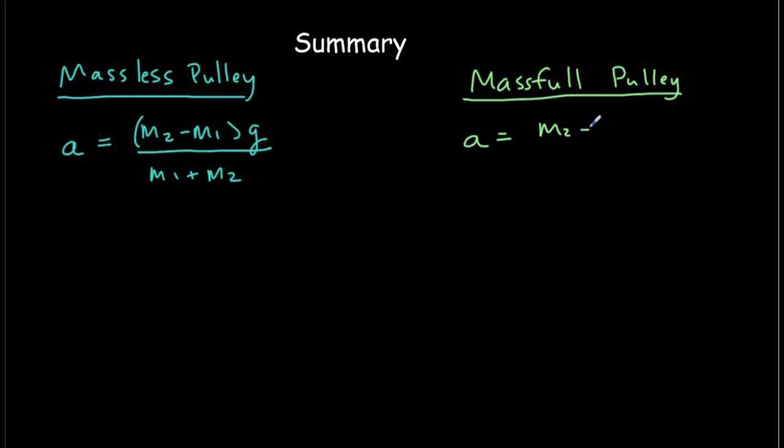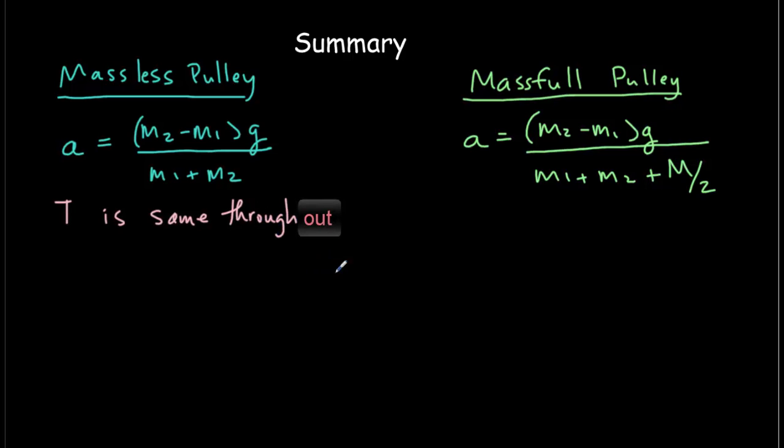Still the same on top, and mostly the same on the bottom, except you've got to add in half the mass of this cylindrical pulley. And one of the key distinctions in these two systems, in the massless pulley, T is the same throughout. There's only one tension that needs to be solved for in the system. Whereas in the mass full pulley, the tension is different on the two sides of the pulley. So T1 does not equal T2. You've got two distinct tensions.